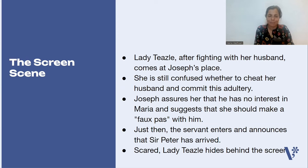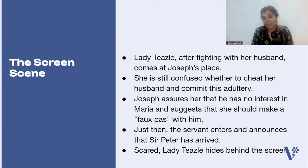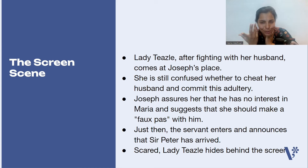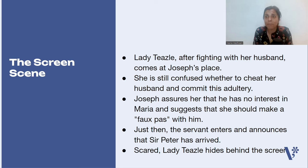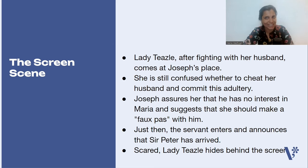Now let's start with the most famous scene of this play — the screen scene. Lady Teasel, after a terrible fight with her husband, says she's leaving and goes to Joseph's house. She is considering having an affair with Joseph but is confused whether to commit this adultery. Joseph assures Lady Teasel that he has no interest in Maria and suggests she should make this faux pas of having an affair outside marriage with him. Just then, the servant of Joseph enters and announces that Sir Peter is coming. Lady Teasel is scared and hides behind the screen, whereas her husband Sir Peter Teasel enters.